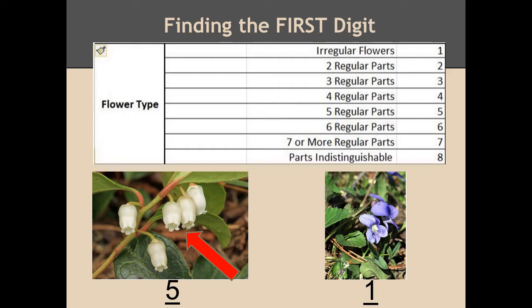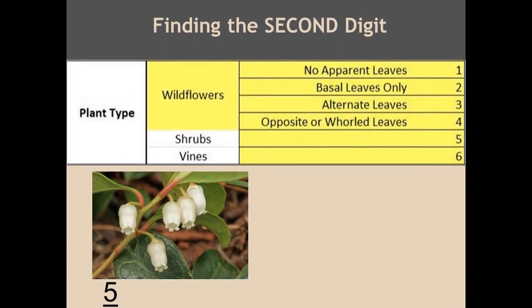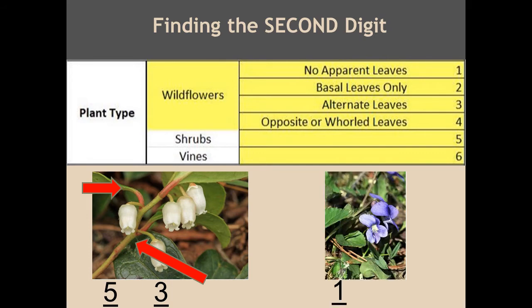Let's move on to finding the second digit by looking at the plant type. We are looking at wildflowers. What is the leaf arrangement for the regular flower? If you selected three, you are correct — these are alternate leaves. Let's look at our irregular flower. The leaves come from the base of the plant. What number would you assign for this plant type? If you said two, you are correct — these are basal leaves.